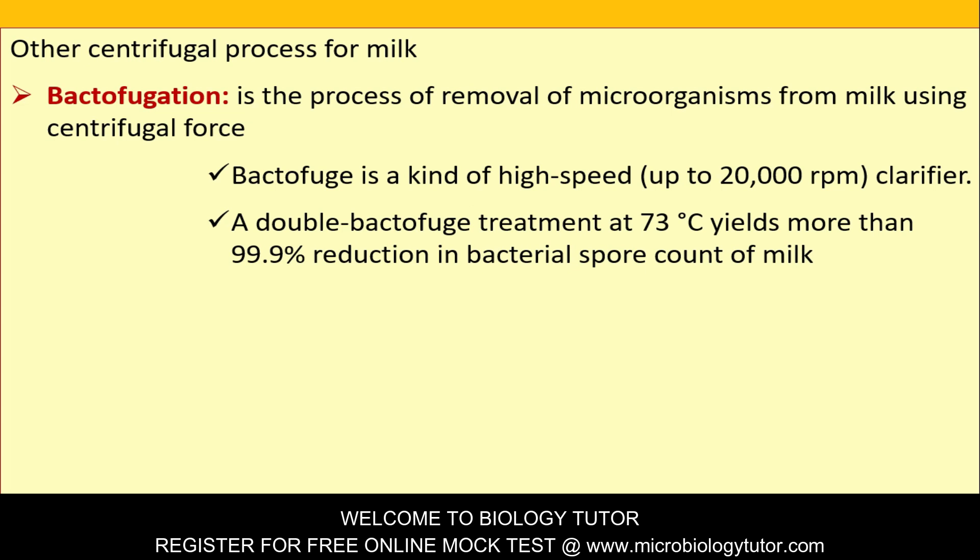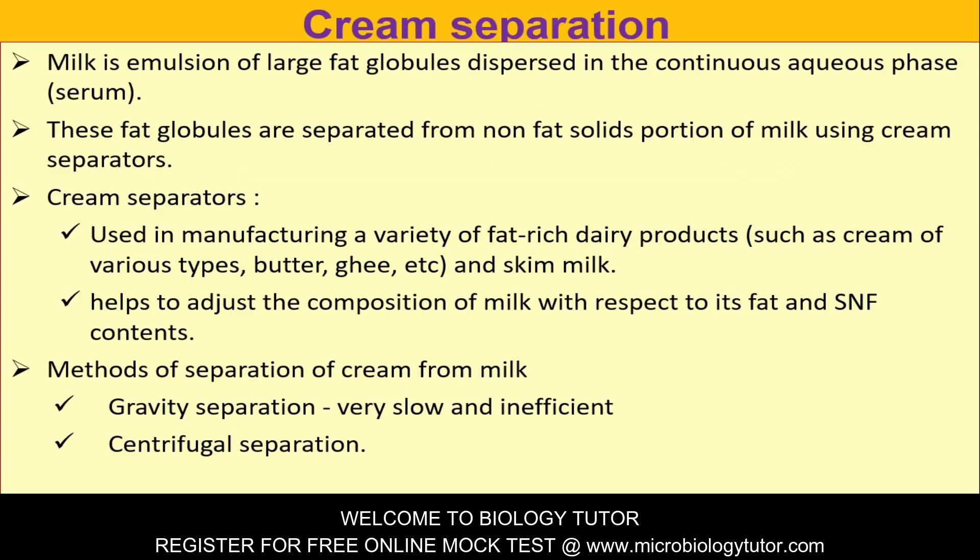A double bactofugation treatment at 73°C yields more than 99.9% reduction in bacterial count of milk. Cream separation: milk is an emulsion of large fat globules dispersed in a continuous aqueous phase or serum. These fat globules are separated from the non-fat solid portion of milk using cream separators, which are used in manufacturing a variety of fat-rich dairy products such as cream, butter, ghee, and skim milk. Methods of cream separation: gravity separation (very slow and inefficient) and centrifugal separation.